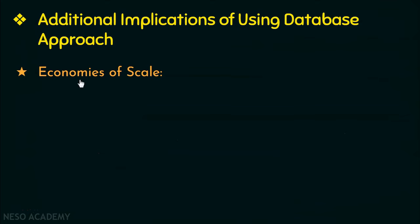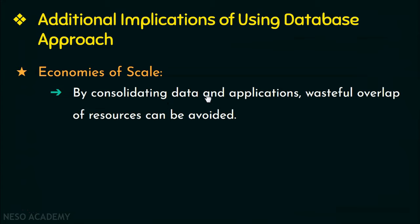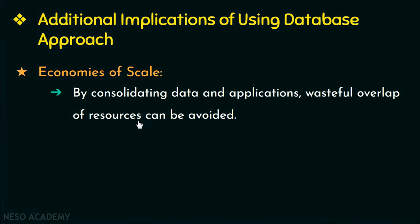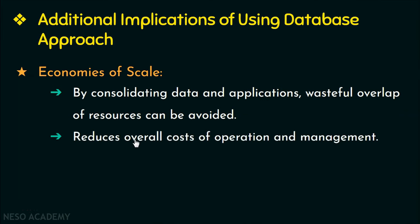The next implication is economies of scale. DBMS allows consolidating data and applications to prevent wasteful overlap of resources across departments. This allows large organizations to invest in more powerful equipment rather than each department having its own, reducing overall costs of operation and management.